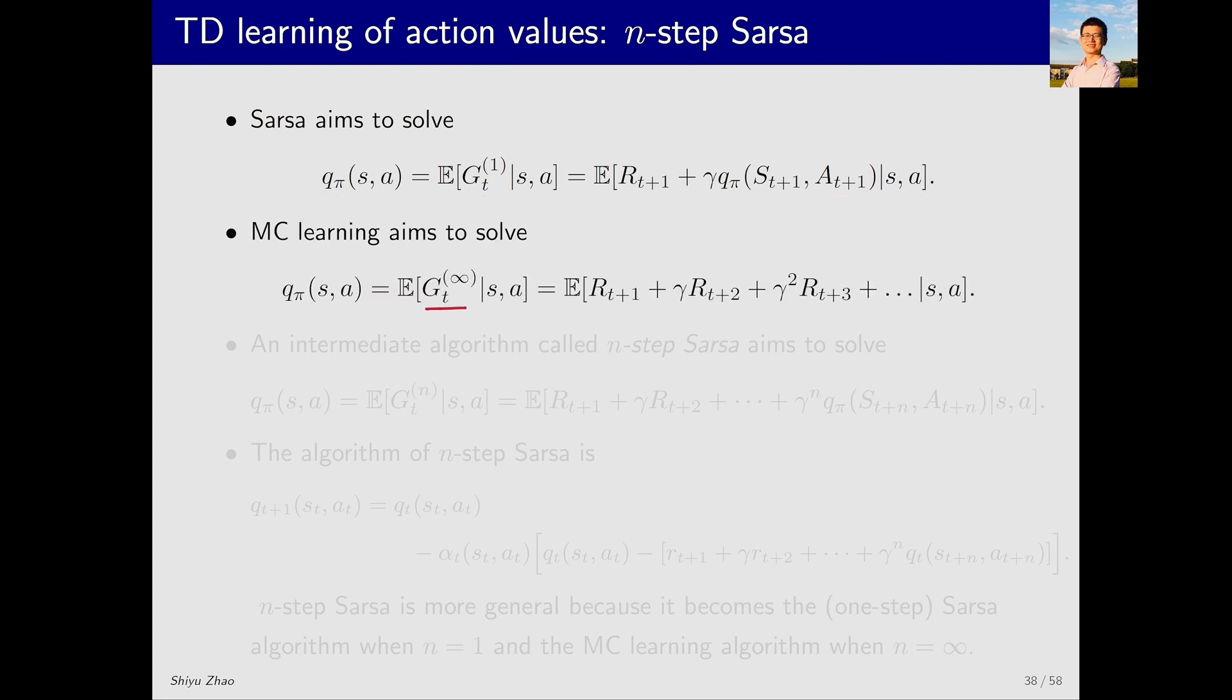By contrast, if we substitute GT infinite into the equation, the right side becomes this. The left side is Q pi. If we sample all rewards in the trajectory and sum them up to get the return, we can approximate Q pi. This approach is the Monte Carlo method. Therefore, using the first decomposition, we get the SARSA algorithm. Using the infinite decomposition, we get the Monte Carlo method.